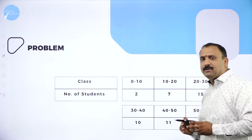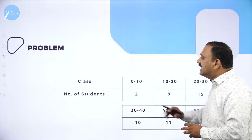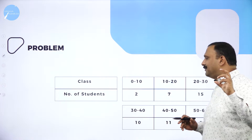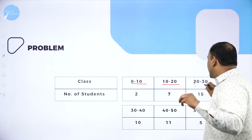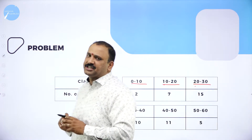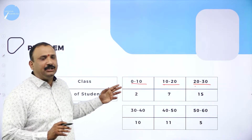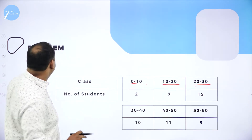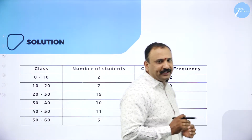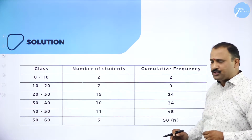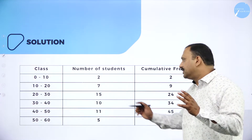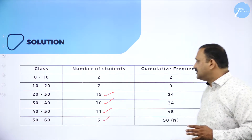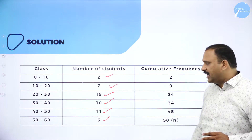The next problem involves class intervals and number of students. The observations are: 0–10, 10–20, 20–30, all the way to 50–60, in intervals of 10. The frequencies are: 0–10 has 2 students, 10–20 has 7, 20–30 has 15, 30–40 has 10, 40–50 has 11, and 50–60 has 5 students — six observations in total.